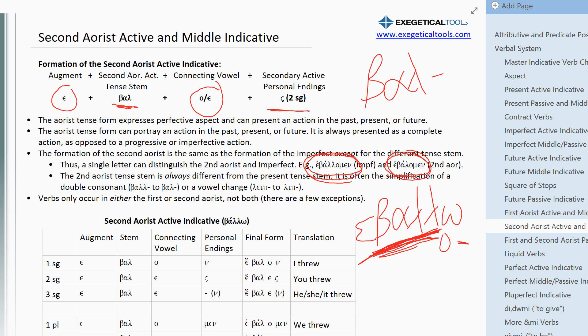Okay, enough about aspect. Let's look back here at the formation. We've gone over that. The second aorist tense stem is always different from the present tense stem. So, with ballo right here, that would never be the second aorist tense stem. It's always going to be different no matter what the verb is. And so you're always going to be able to distinguish it from the imperfect.